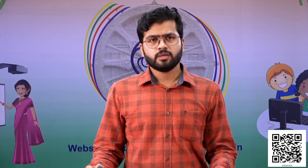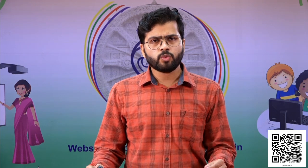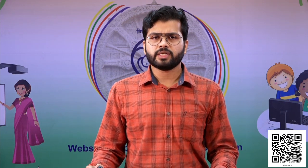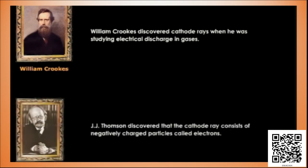Electrons and protons were discovered through an experiment called the discharge tube experiment. William Crooks discovered cathode rays when he was studying electrical discharge in gases, whereas J.J. Thomson discovered that the cathode ray consists of negatively charged particles called electrons.